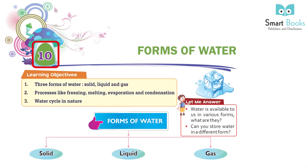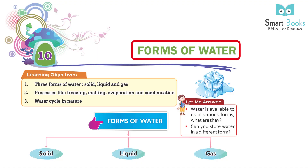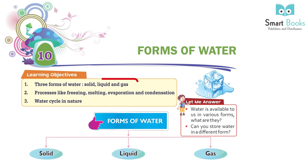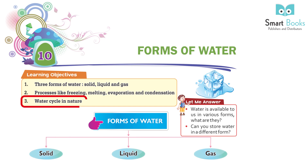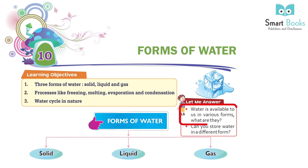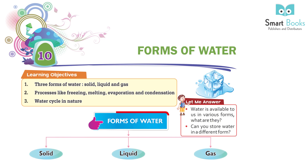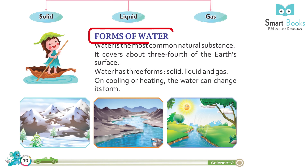Chapter 10: Forms of Water. Learning objectives: 1. Three forms of water — solid, liquid, and gas. 2. Processes like freezing, melting, evaporation, and condensation. 3. The water cycle in nature. Water is available to us in various forms. Can you store water in a different form?